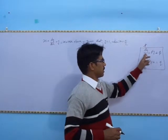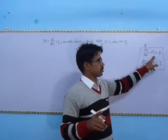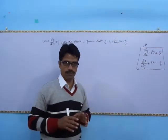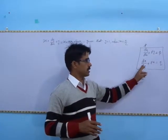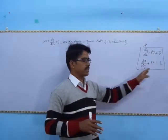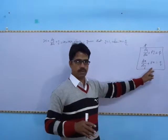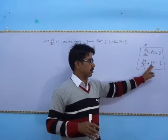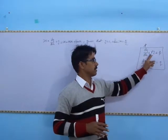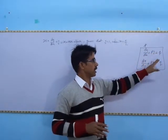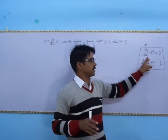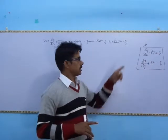If dy/dx is present, then y must be single and P and Q can be constants or functions of x. If you take dx/dy, then x can be single and P and Q can be constants or functions of y. So the linear form means the dependent variable appears alone.